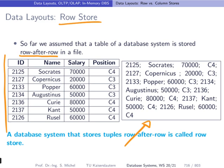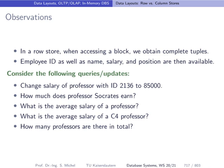When you're accessing a block on disk within a row store, you have access to all of the attributes of all tuples in that block. So if you're reading a tuple — a row — you have the employee ID, the name, the salary, and the position.